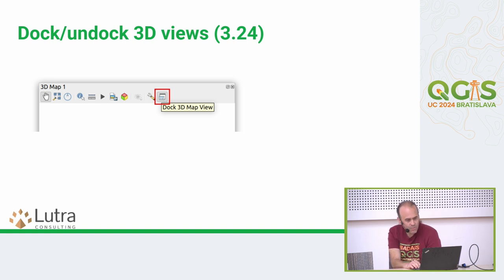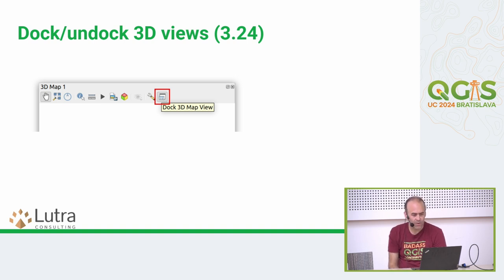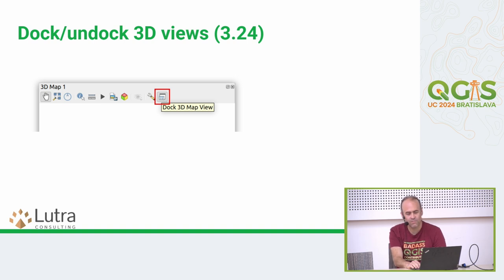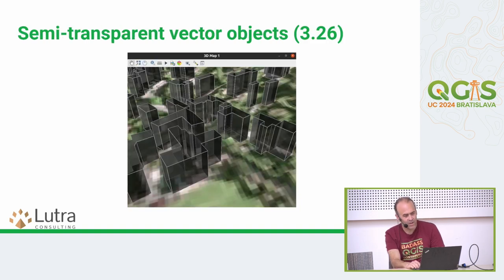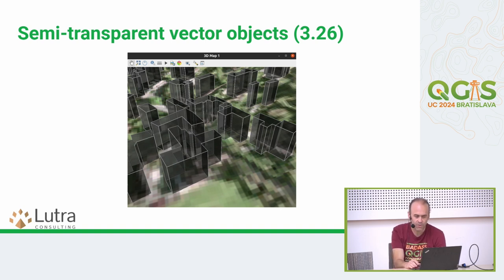Docking and undocking was also added in 3.24, and this was later also implemented in other window widgets in QGIS. This is similar logic to how it works for the attribute table — you can use an operating system-level window or a dock widget which you can dock on the sides of your 2D view.